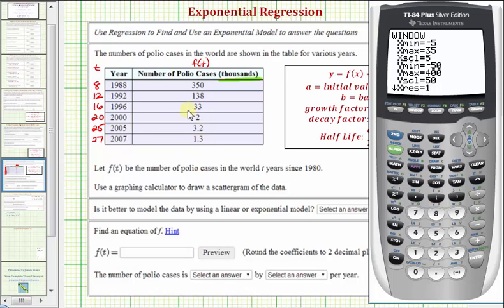So now to turn the scattergram on, there's a couple of ways of doing this. A quick easy way is to press y equals and highlight plot one by pressing up, enter, and now we can press graph. So here's our scattergram.